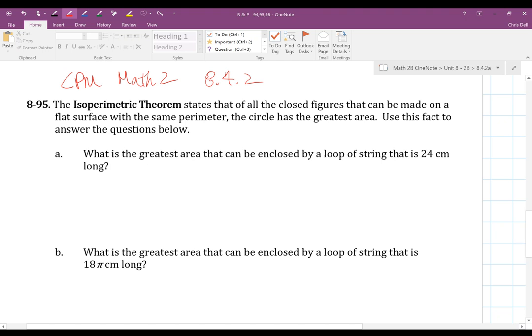So number 95. It says the isoperimetric theorem states that of all the closed figures that can be made on a flat surface with the same perimeter, the circle has the greatest area. Use this fact to answer the questions below.